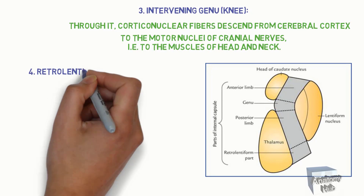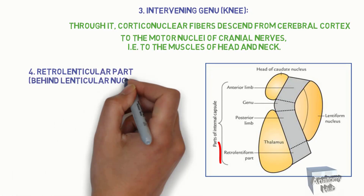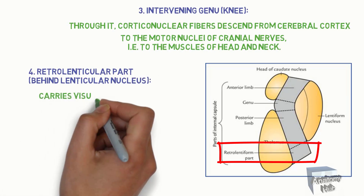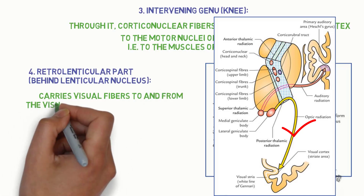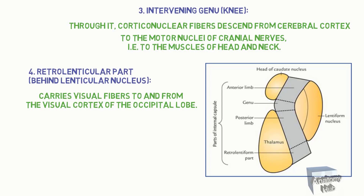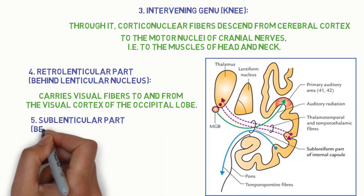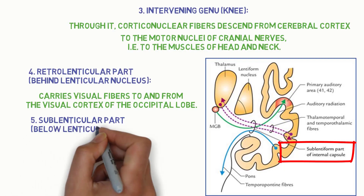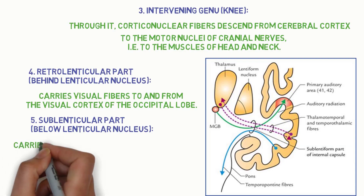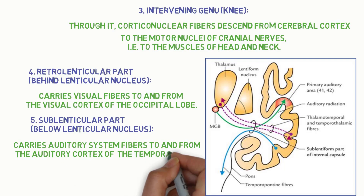Part 4: Retrolenticular part, behind the lenticular nucleus. It carries visual fibers to and from the visual cortex of the occipital lobe. Part 5: Sublenticular part, below the lenticular nucleus. It carries auditory system fibers to and from the auditory cortex of the temporal lobe.